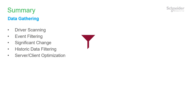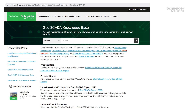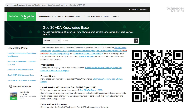In summary, we've covered the basics of data gathering efficiency, looking at driver behavior, the historian, and the server-client interface. I hope you found this review helpful. There's a lot more to good SCADA performance, including the setup of the historian, logic, configuration, and other calculations — not forgetting SQL queries and reporting. These will be covered in future videos. There's a lot to discover in our new versions, and we're continuing to innovate with new features in future releases. Please keep in touch with our blog, knowledge base, and forums. Thank you.